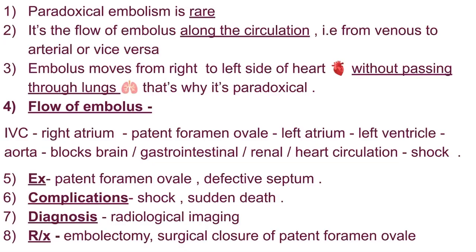Now, paradoxical embolism is rare. It is the flow of an embolus along the circulation from venous to arterial, or vice versa. The embolus moves from the right to the left side of the heart without passing through the lungs — that is why it is called paradoxical. Normally it won't pass from the right side to the left side directly, but we can see this in cases of patent foramen ovale or a defective septum.